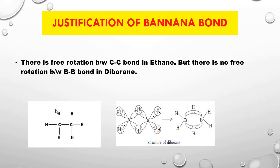We compare diborane with ethane. In ethane, there is a single bond between carbon and carbon, and there is free rotation about that carbon-carbon bond. But in diborane, there is no free rotation about the bond between the two boron atoms. That justifies that the bond between the two borons is not a simple or normal bond — it is a justification for the existence of banana bonding in diborane.